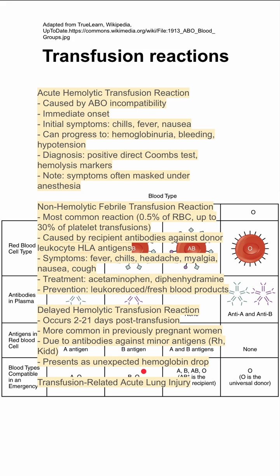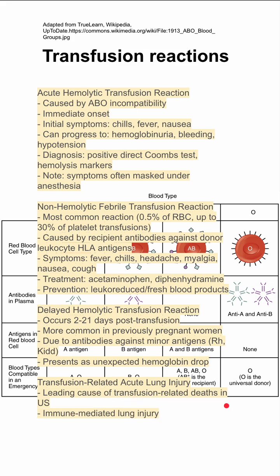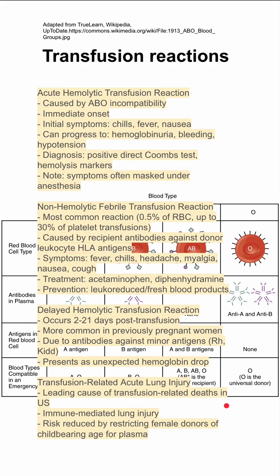Lastly is transfusion-related acute lung injury, or TRALI. This is the leading cause of transfusion-related deaths in the United States, and it's an immune-mediated lung injury. You can reduce the risk of TRALI by restricting female donors of childbearing age for plasma.